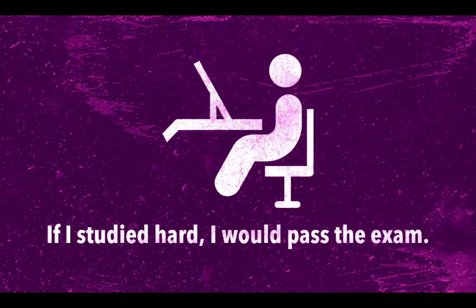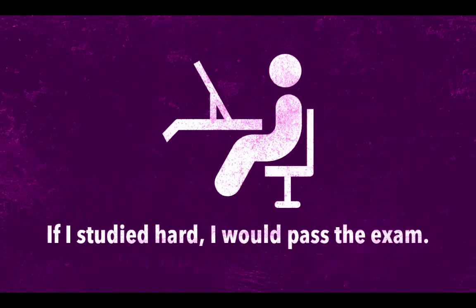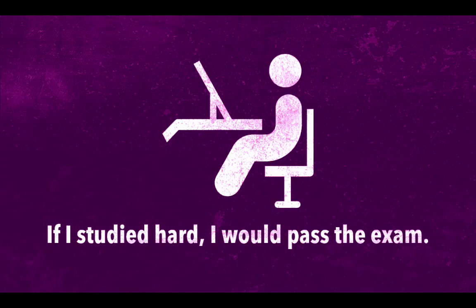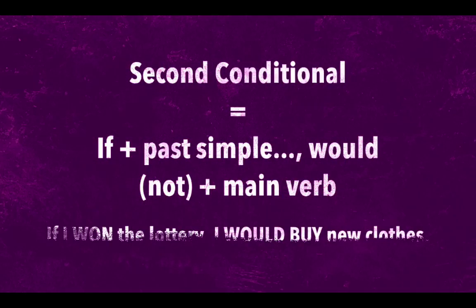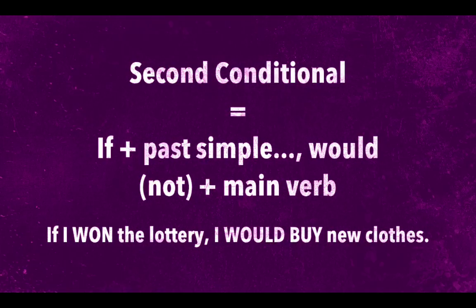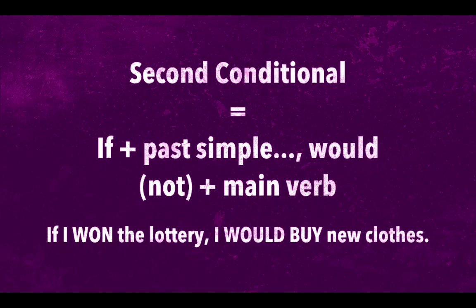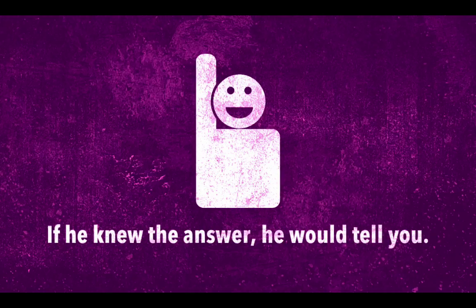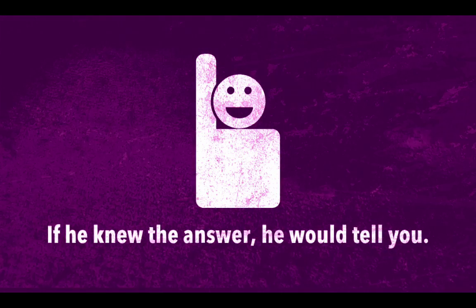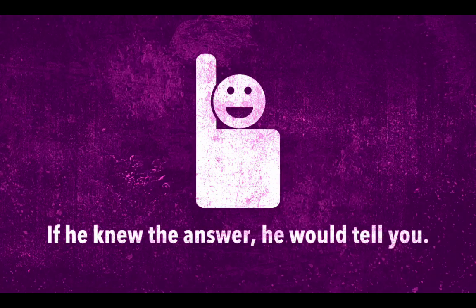Now, observe this other sentence. It talks about a present or future situation that is imaginary. Second Conditionals describe unreal, imaginary situations that haven't happened yet. We use the Second Conditional to talk about hypothetical situations in the present or future, or as a way to give advice to people.